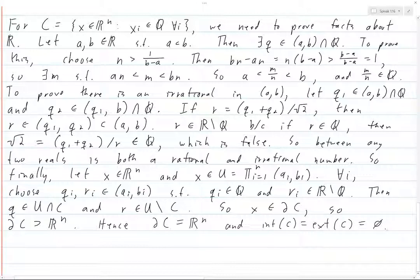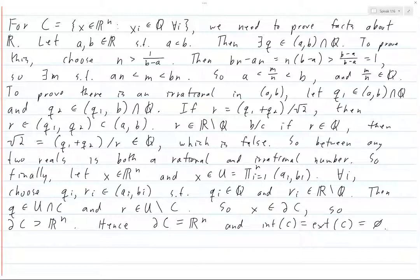Since the boundary of C contains all of ℝⁿ, and ℝⁿ is everything, the boundary of C is precisely equal to ℝⁿ. Both the interior and exterior of C must be empty because there is nothing left over. This is a little strange at first, but when you reflect on it, it starts to make sense — and you can look at the proof to verify it's valid. That covers all three sets: we found the interior, exterior, and boundary for each.